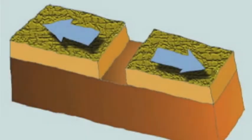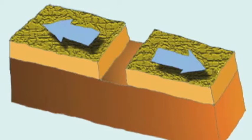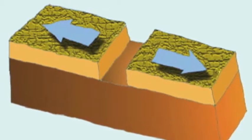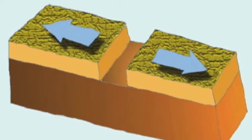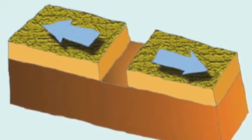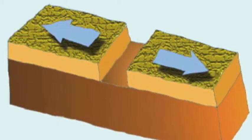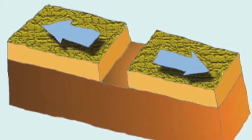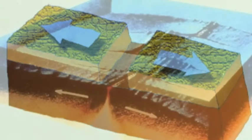Divergent Plate Boundaries by Sarah Hayes. Divergent plate boundaries are plate boundaries where crust is generated as the plates pull apart from each other. At divergent plate boundaries, it is the brittle layer of earth, the lithosphere, that usually breaks. This pulling apart can cause two things to form: a new seafloor at mid-ocean ridges or rift valleys.